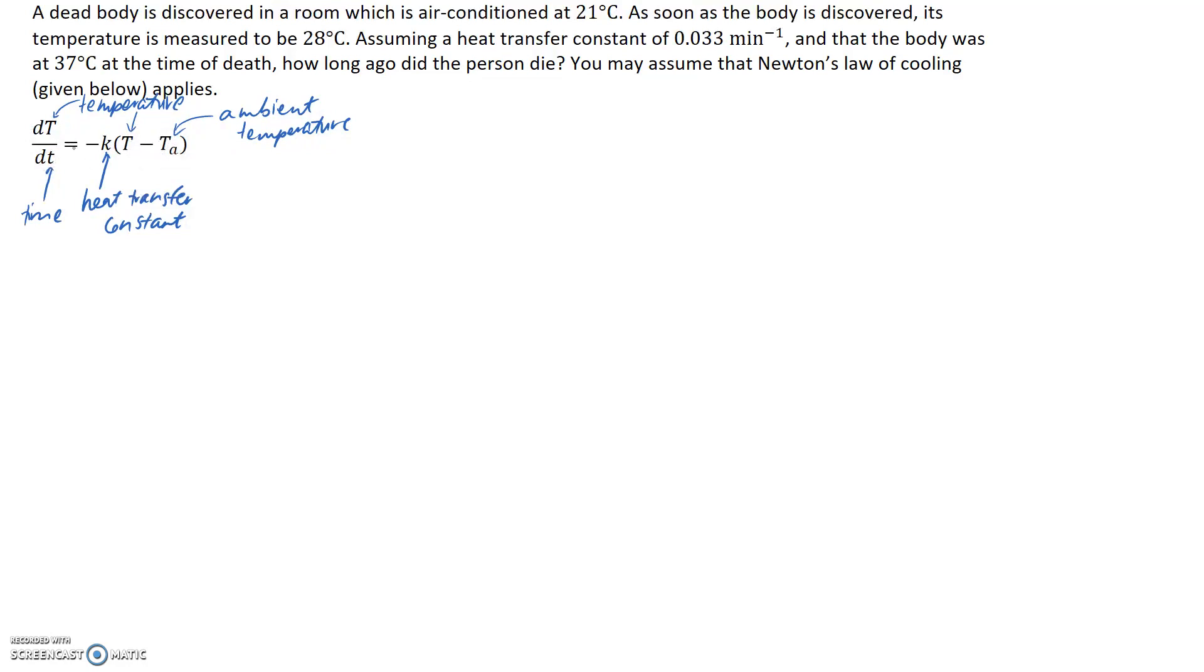Our first step here is going to be to solve this equation in order to get an expression for the temperature as a function of time. Once we've got that, we're going to go back and read the information to pick up what conditions we can use to find the constants. Then we should be able to solve for our unique solution and figure out how long ago the person actually died.